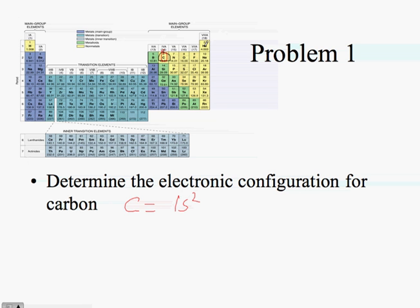I go to the next level — level 2. I have to go across the S block, so I write 2s, and I count 2 boxes, giving me 2s2. Now going across, I'm still on level 2 but I've entered into my P block elements. I write P and count the number of boxes it takes to get to carbon, which is 1, 2. So the electronic configuration for carbon is 1s2, 2s2, 2p2. Note the number of electrons — 2, 4, 6 — equals the atomic number of carbon, which is 6.